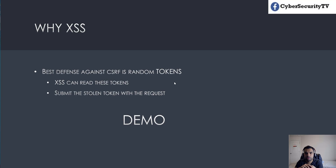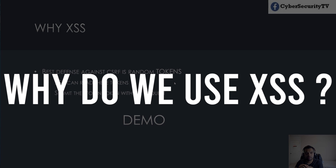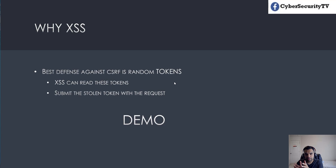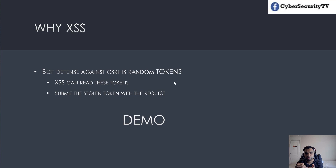Next, why do we use XSS and why do we even need XSS to bypass CSRF? The best defense against cross-site request forgery is using random tokens. With cross-site scripting we will read those random tokens, because that's the most critical and unknown piece for the attacker — it's like reading someone's session token. If you can read that random token, you can easily craft and submit the stolen token with a forged request.